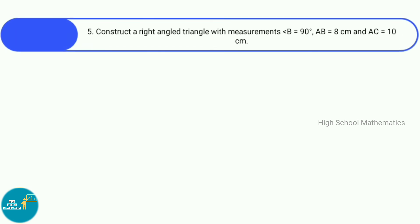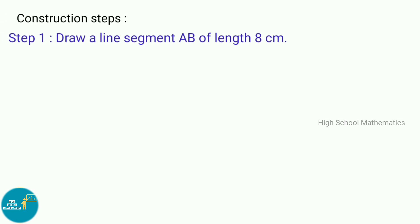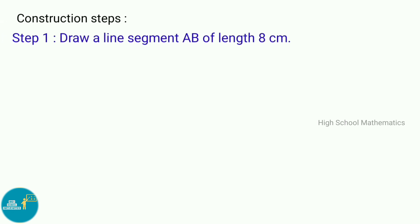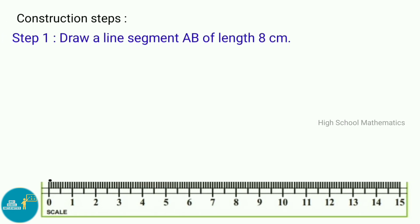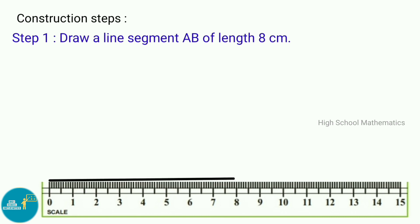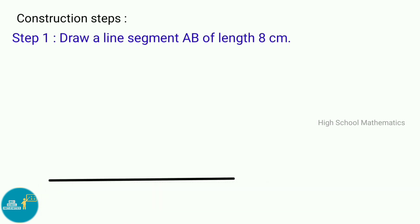Fifth sum: Construct a right angle triangle with measurements angle B equals 90 degrees, AB equal to 8 centimeters, and AC equal to 10 centimeters. Construction steps — Step 1: Draw a line segment AB of length 8 centimeters.